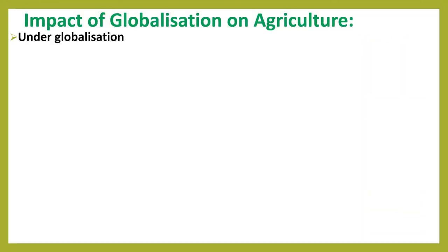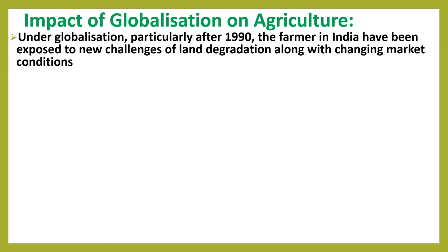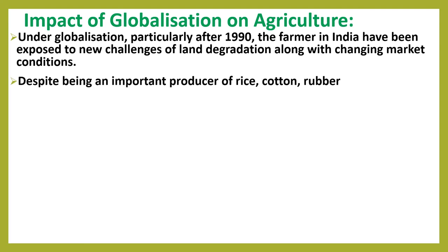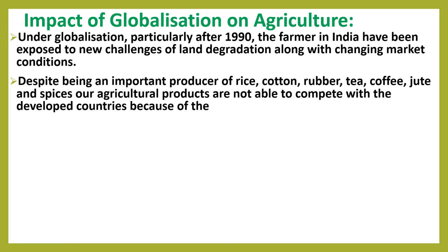Under globalization, particularly after 1990, the farmers in India have been exposed to new challenges of land degradation along with changing market conditions. Despite being an important producer of rice, cotton, rubber, tea, coffee, jute and spices, Indian agricultural products are not able to compete with developed countries because of the highly subsidized agriculture in those countries.